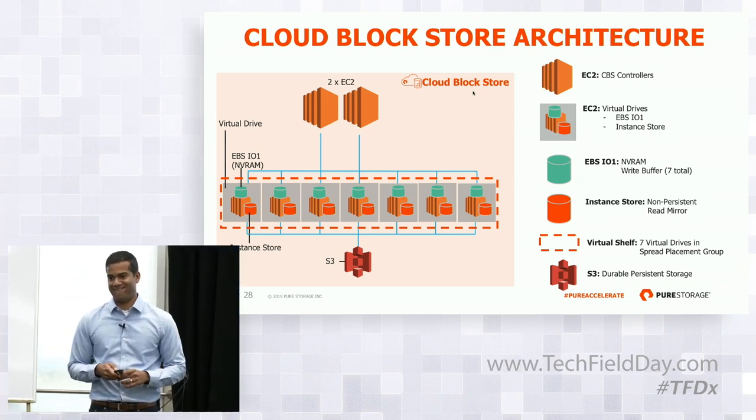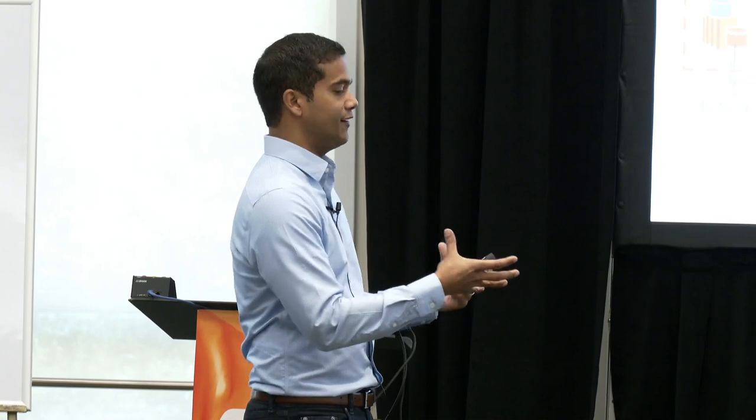An audience member notes this looks expensive. It turns out to be quite interesting: i3 instances, combined with data reduction — for every byte of data housed in Cloud Block Store, we request a fraction of that on the backend storage. There's also thin provisioning on top of that. And if you do the pricing for a dollar per gig, at contract rates it's competitive with EBS. With i3en instances, it actually is quite a bit cheaper — so you get a very fast product for a lower cost depending on how you're procuring it.